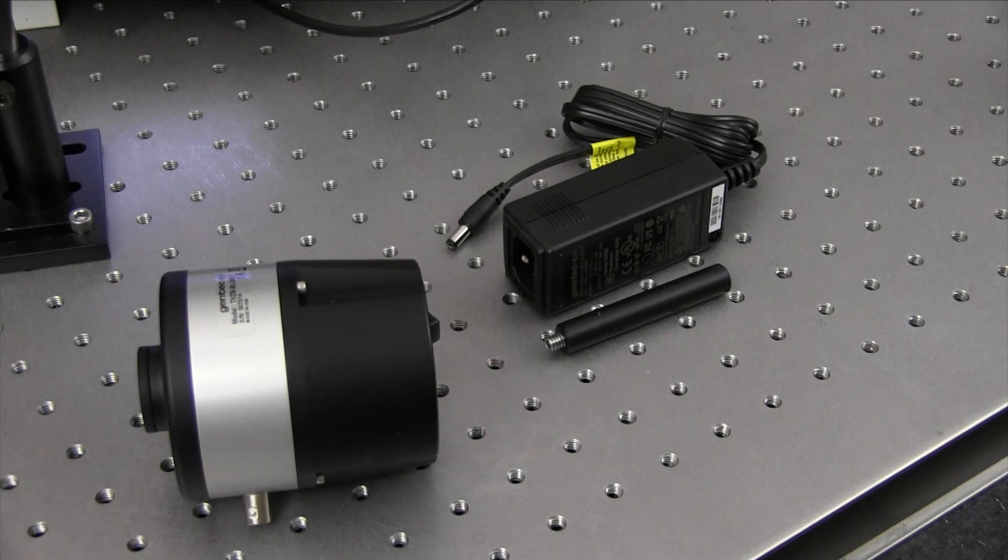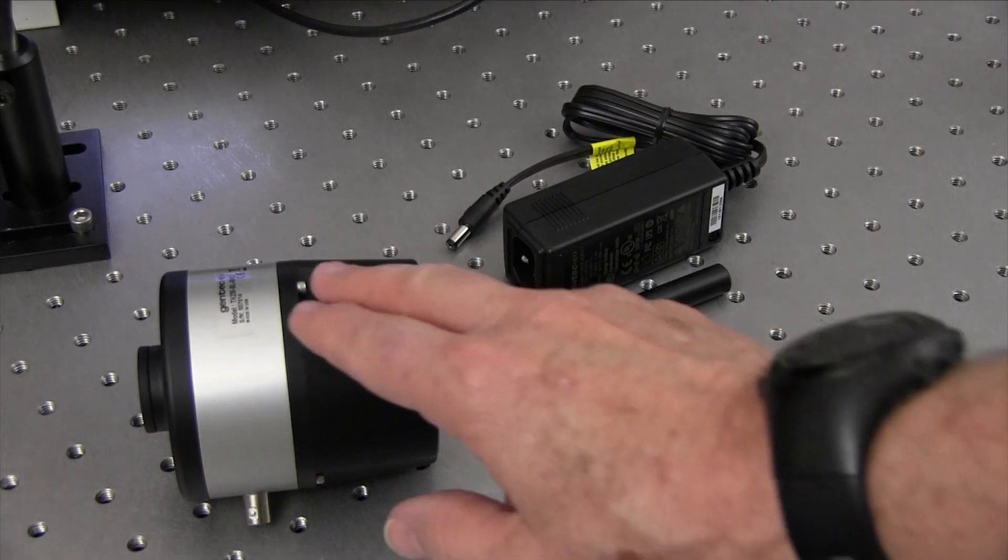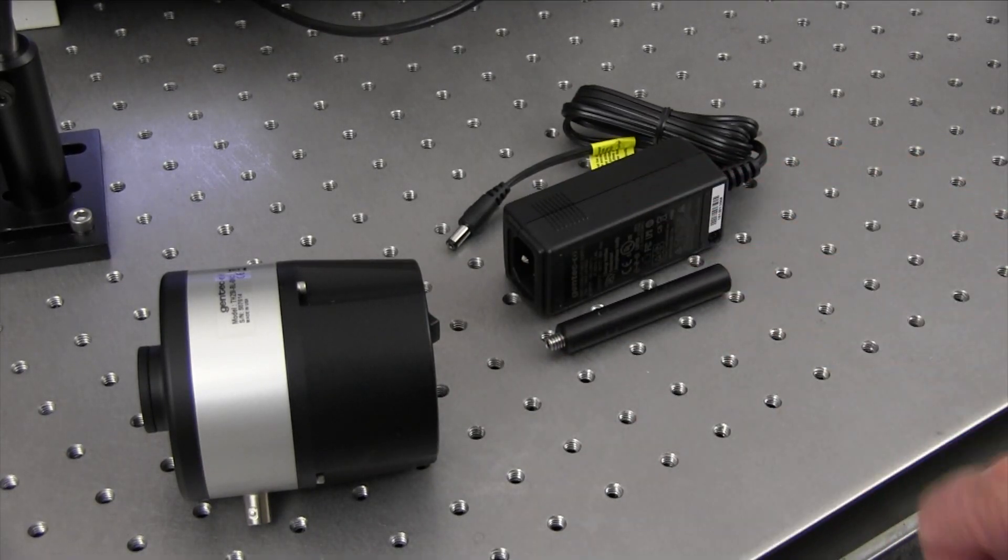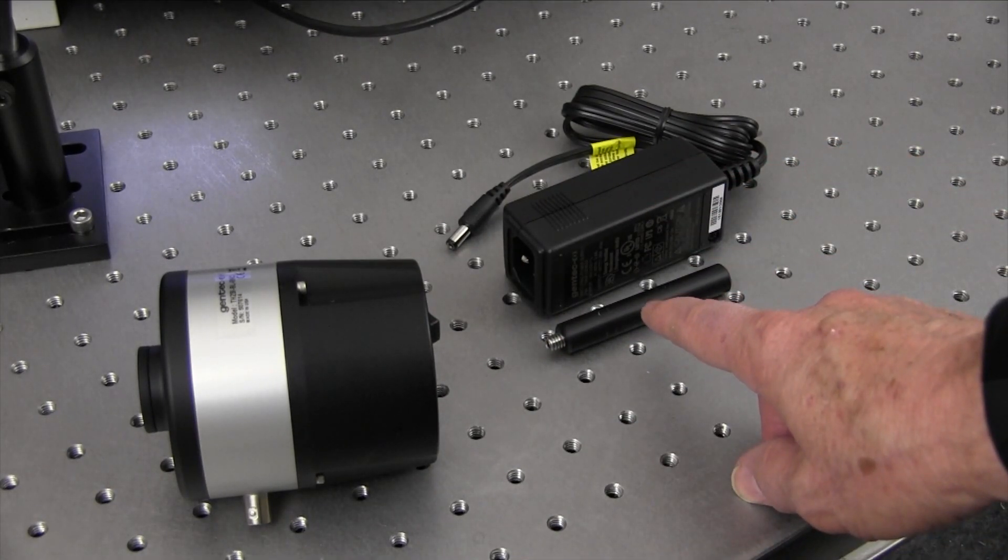What do you get when you take delivery of a Terahertz 5i? You get the radiometer, an AC-DC power supply and AC cord, and a Delrin mounting post.